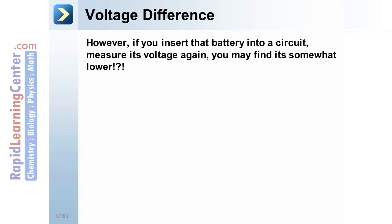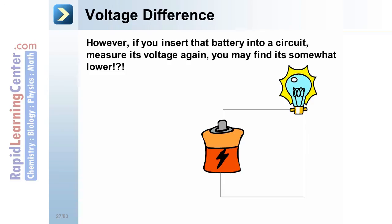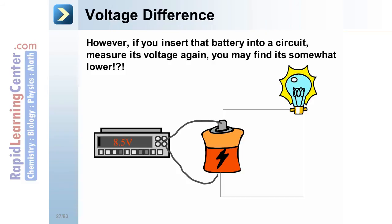Voltage difference. However, if you take that same battery, insert it into a circuit, and measure its voltage again, you may find it's somewhat lower. Now we get a reading of only 8.5 volts. It's the same battery. What's happening?